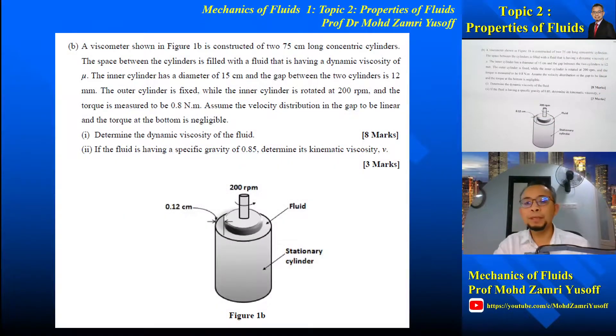In part b of the questions we are given a viscometer as shown in the figure, constructed of 75 cm long concentric cylinders. The space between the cylinders is filled with a liquid having dynamic viscosity mu. The inner cylinder has a diameter of 15 cm and the gap between the two cylinders is constant, equal to 12 mm. The outer cylinder is fixed while the inner cylinder is rotated at 200 rpm, and the torque is measured to be 0.8 Nm.